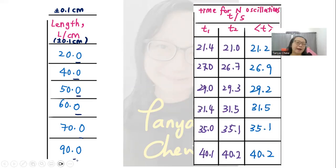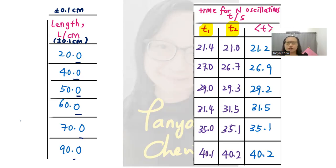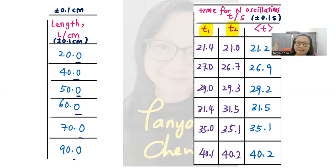What about the time taken for n oscillations? The raw data are T1 and T2 only. T average is called calculated data — as long as you use a calculator to do your calculation, those are called calculated data. Since my reaction time plays a role — normal human reaction time is between 0.3 and 0.7 seconds — I have to increase the absolute uncertainty of my digital stopwatch to plus or minus 0.1 seconds. I write it here to remind myself that all readings of T1 and T2 must be in one decimal point only.